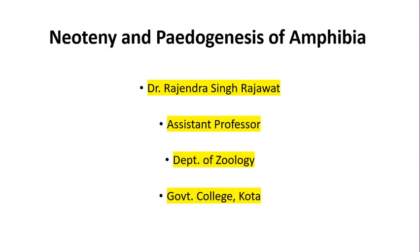In Pedogenesis, the larva becomes sexually mature and produces young ones — it starts reproduction in the larval stage. Whereas in Neoteny, it is the retention of larval traits in the adult body, such as the retention of gills in some salamanders.